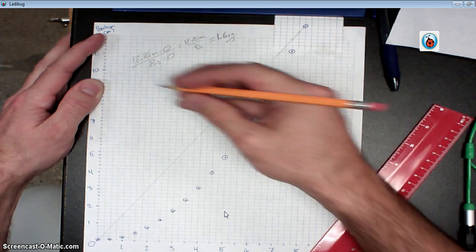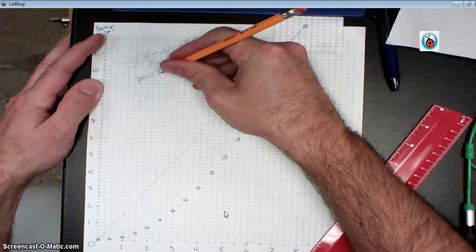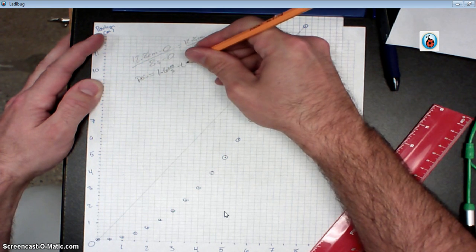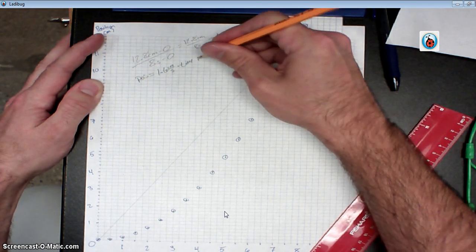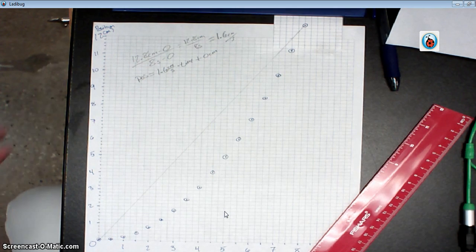And my y equals mx plus b would say position equals my slope 1.6 centimeters for every second times time. Plus starting point, there it goes through at 0, so 0 centimeters. Sweet, I've got my equation, I'm done. I'm going to turn this thing in, get my points.